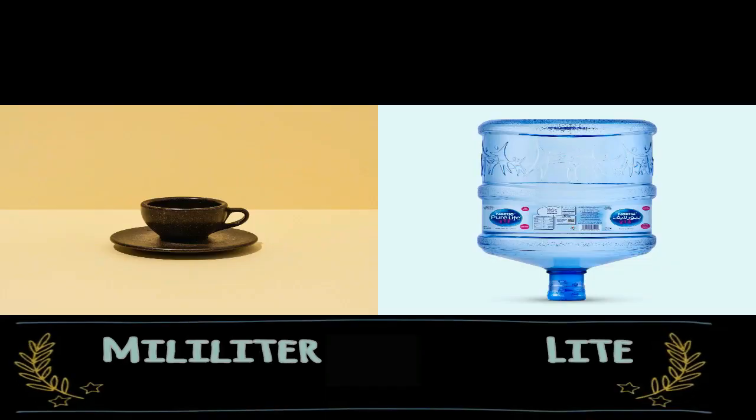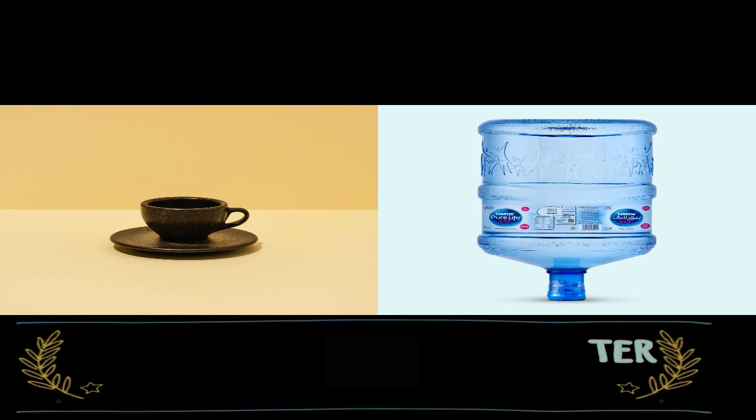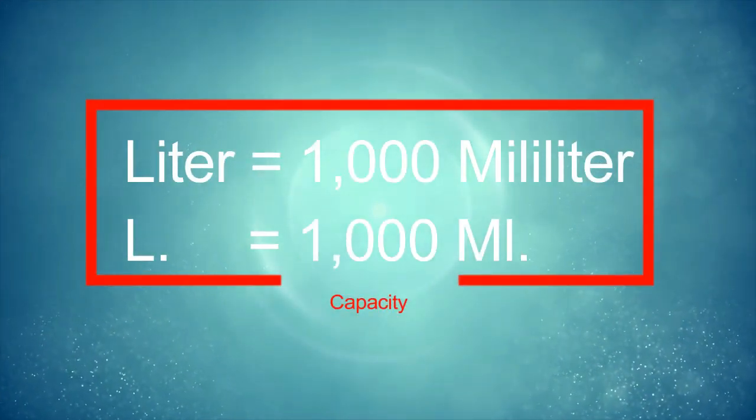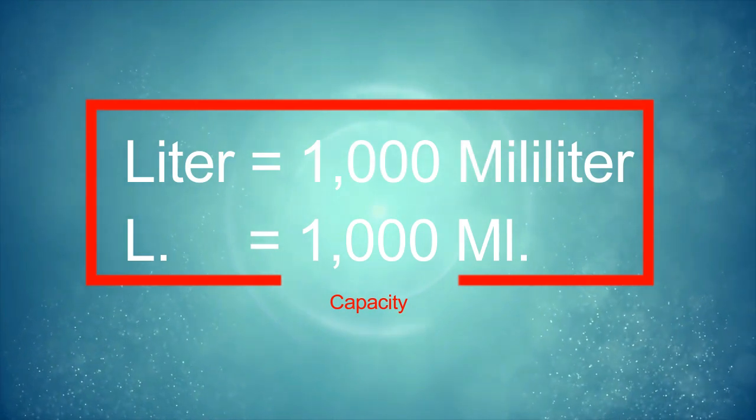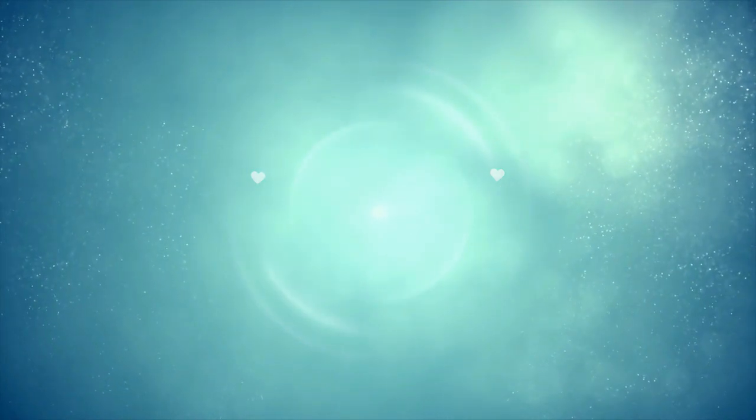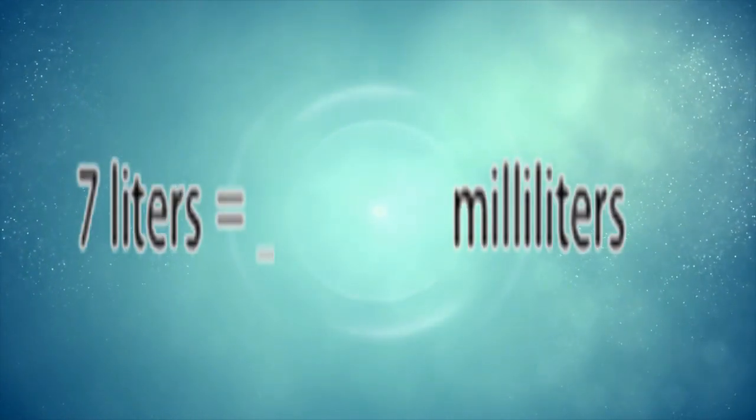Milliliter and liter are the units of capacity. Milliliter is measuring small capacity, liter is measuring big capacity. Liter equals 1000 milliliter, so if you want to convert from liter to milliliter you're going to multiply by 1000.